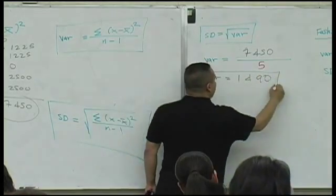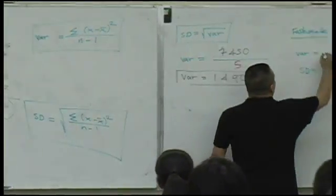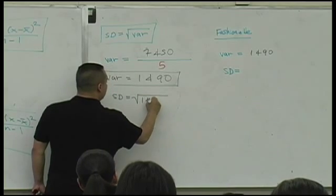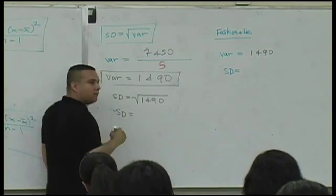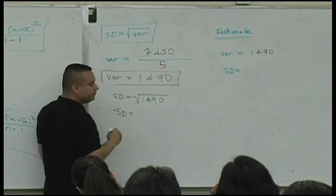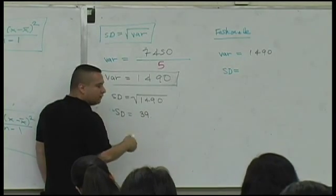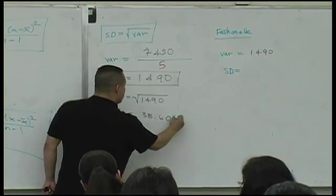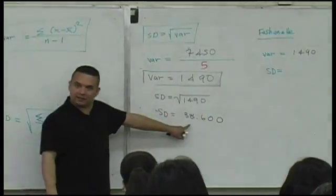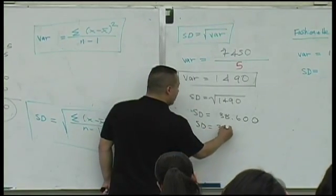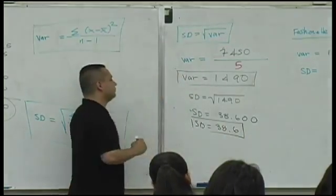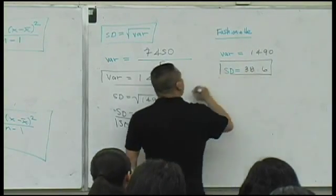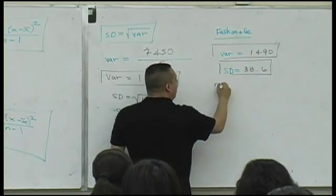This is Fashionette's variance. What is Fashionette's standard deviation? Standard deviation is the square root of 1490. What is that going to be? What is it? Approximate the answer to the nearest tenths. 39? Okay give me what you have. 38.6, 0.0. If you approximate this to the nearest tenths the answer is what? 38.6.